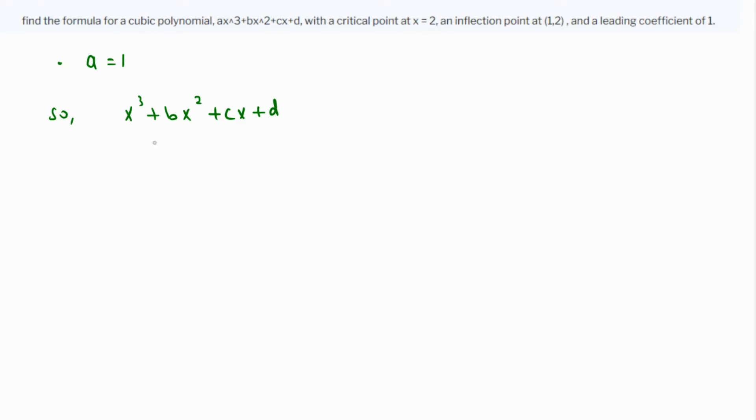Given the critical point at 2, if we consider this as f(x), then f'(x) = 3x² + 2bx + c. If x=2 is a critical point, it means that f'(2) = 0.